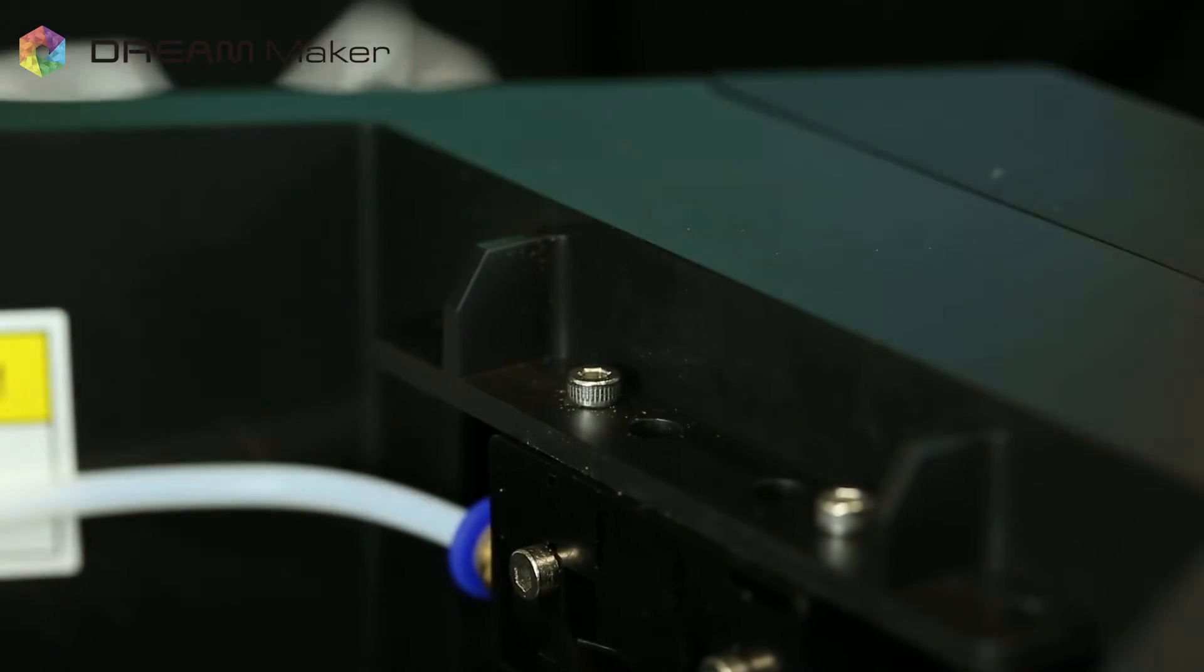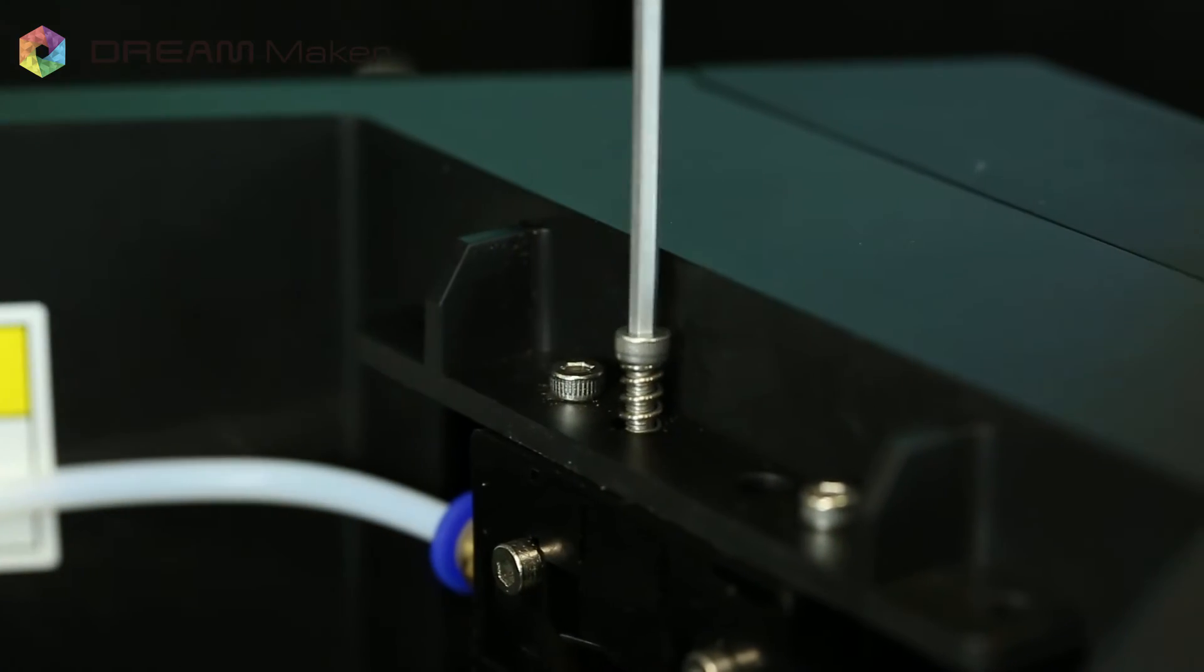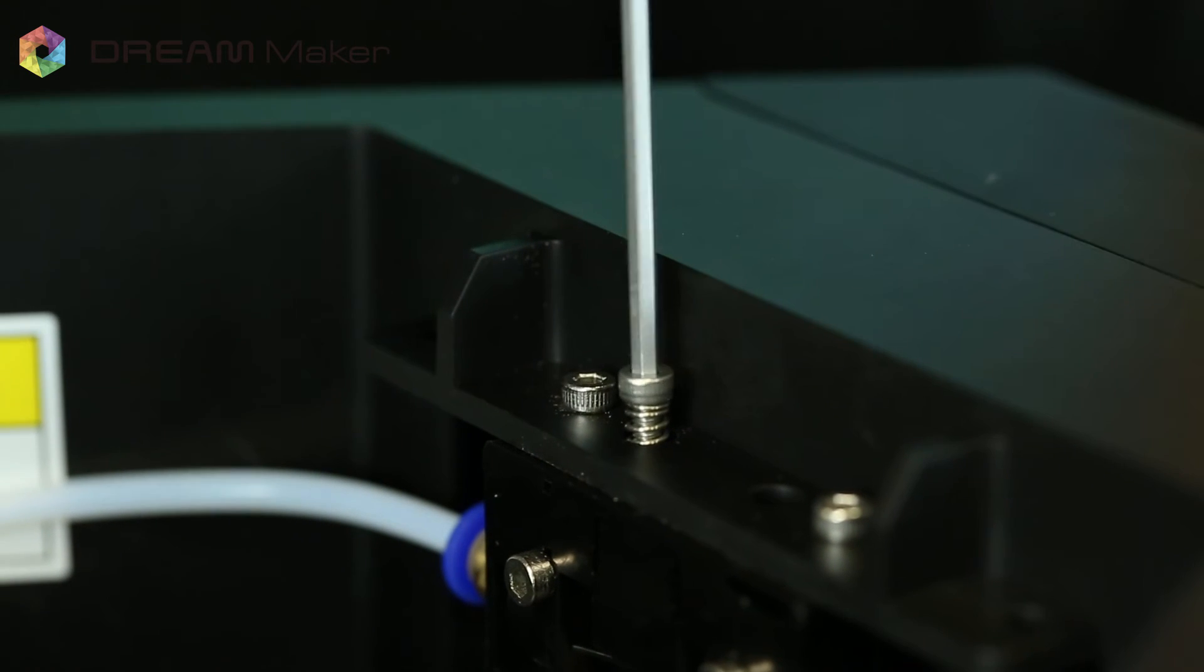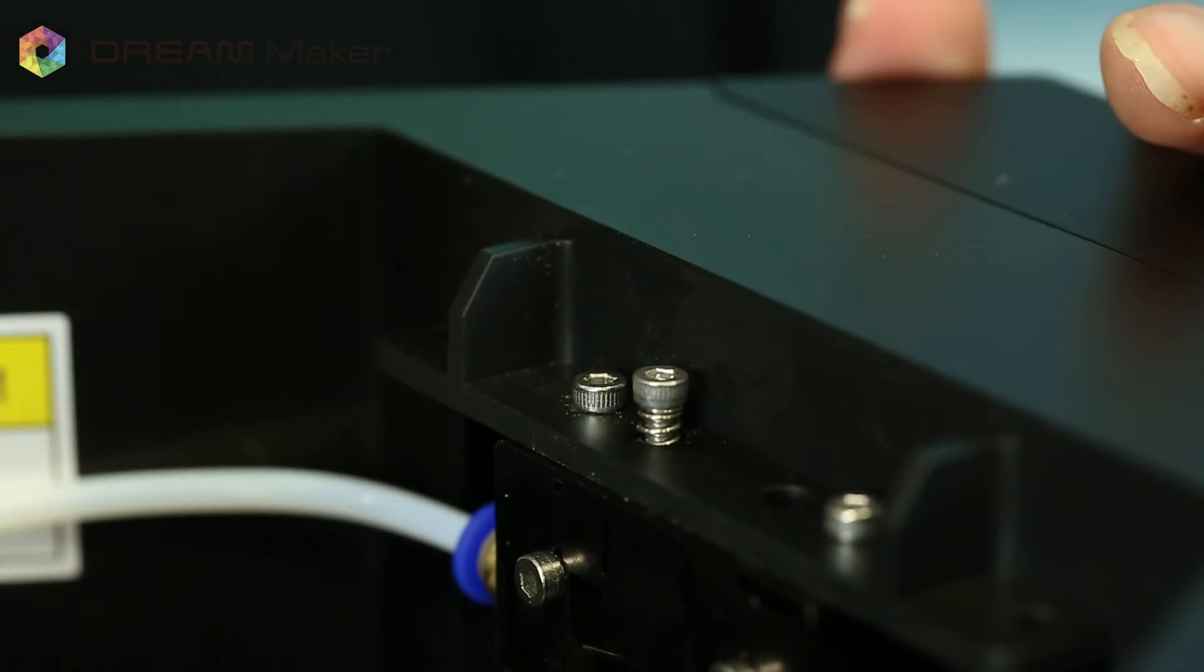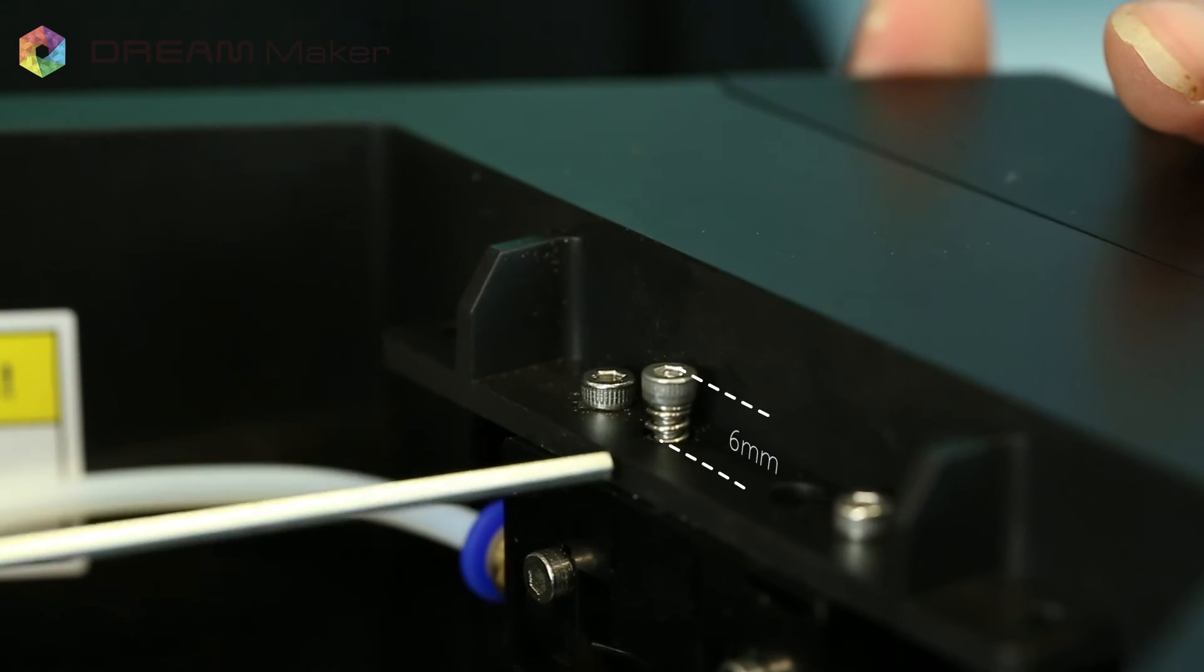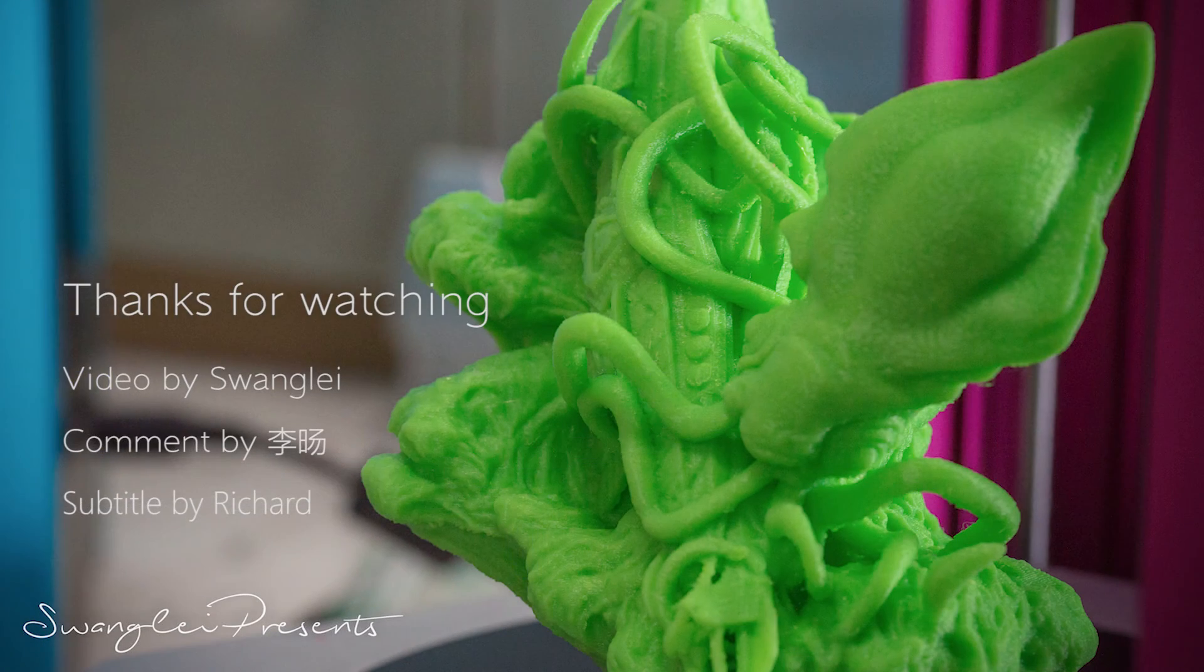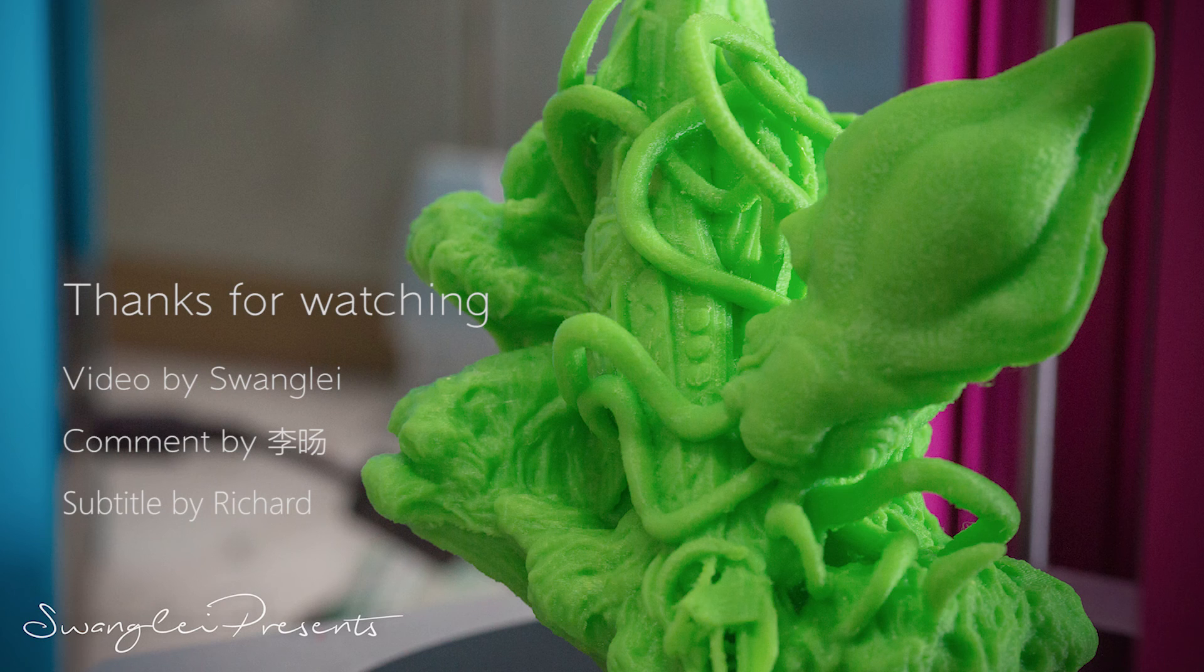At last, put back the pressing screw into the slot and make sure the end of the screw stays around 6mm away from the upper surface.